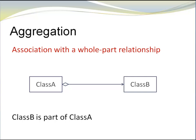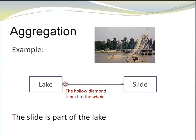Aggregations are associations with a whole-part relationship. Notice the hollow diamond. It is next to the class that represents the whole. Let's look at an example. We have a lake and the lake has a slide. The slide is part of the lake. Notice the hollow diamond is next to the class that represents the whole. The lake is the whole. The slide is the part.